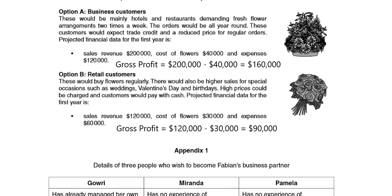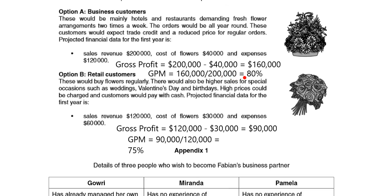If we work out the gross profit margins: for option A, we take the gross profit and divide it by the sales revenue — we get 0.8, and as a percentage that's 80%. For option B, the gross profit of $90,000 divided by the sales revenue of $120,000 gives 0.75, or 75%. We can use this as a comparison — option A's gross profit margin is 5% higher, suggesting it might be better.